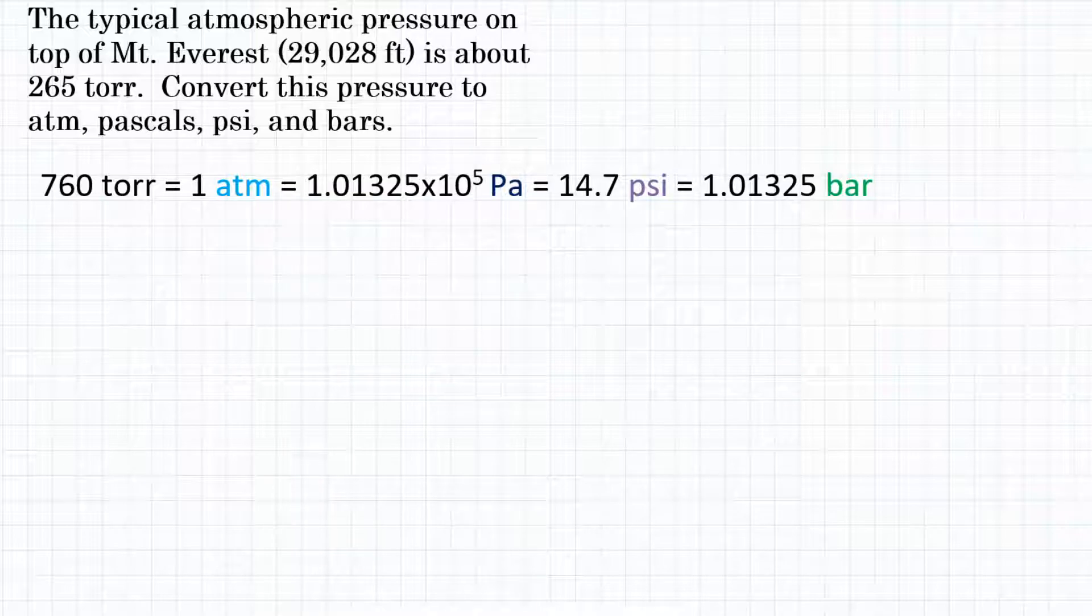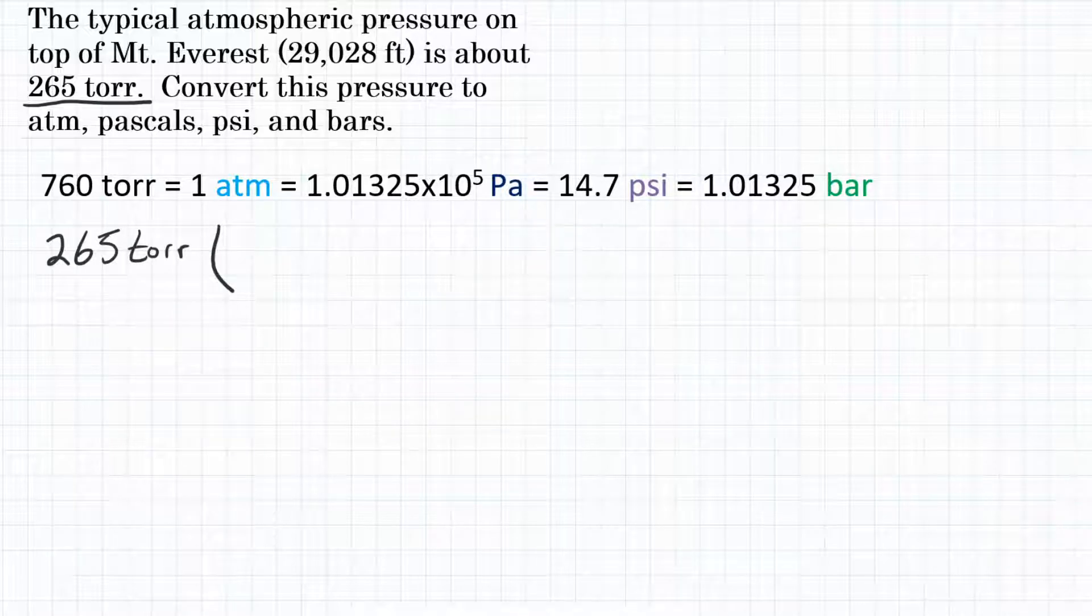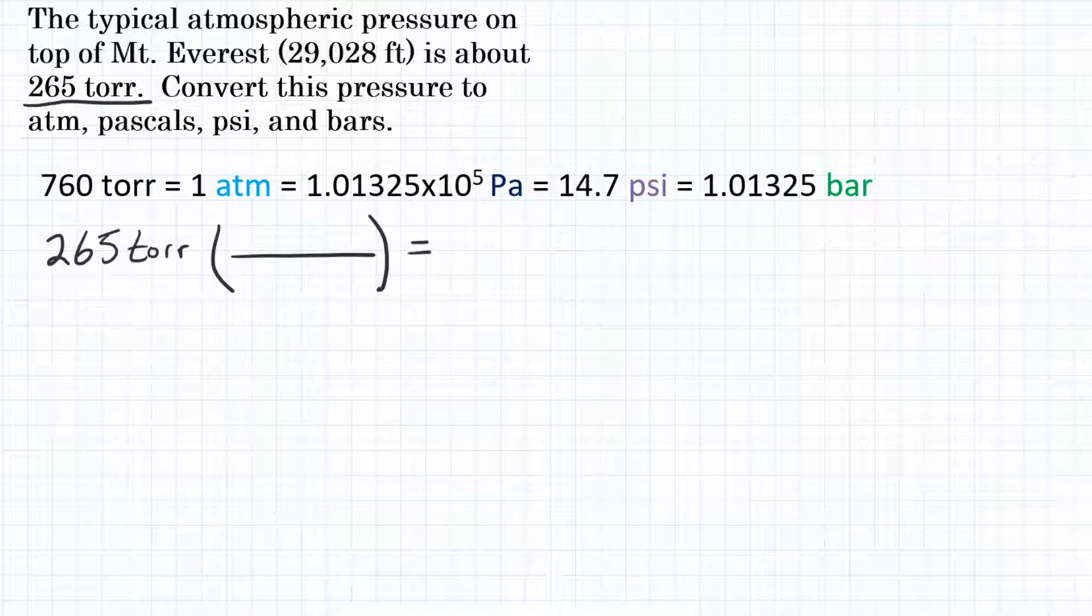So this is a pressure conversion problem where we are starting with 265 torr and we're going to convert that pressure to four other pressures, each with different units. In each case, we're going to start with 265 torr and multiply by a conversion factor and that will get us to the unit we desire.